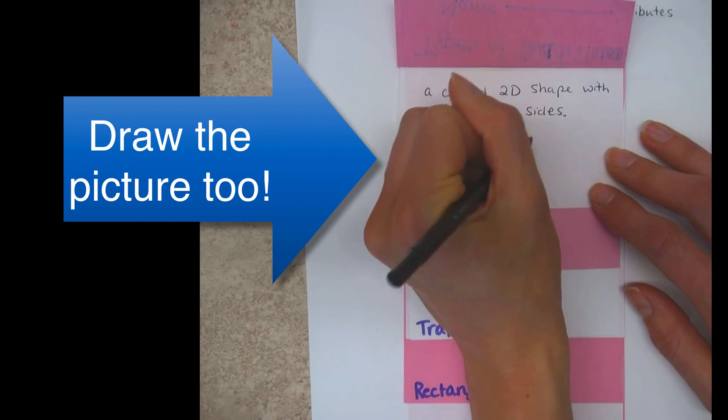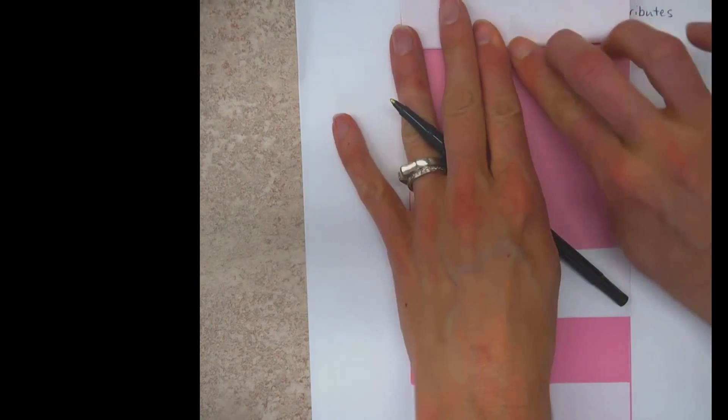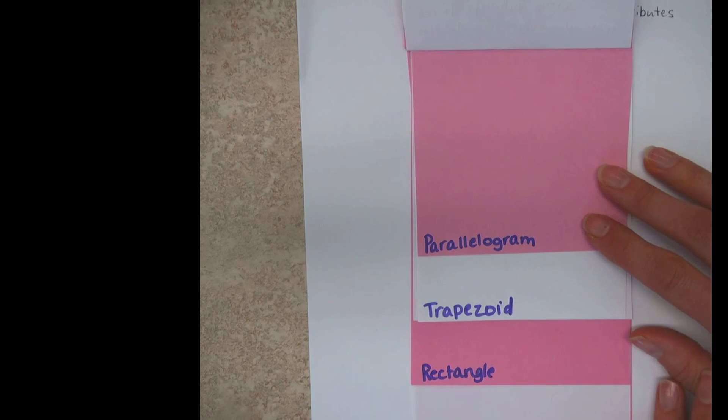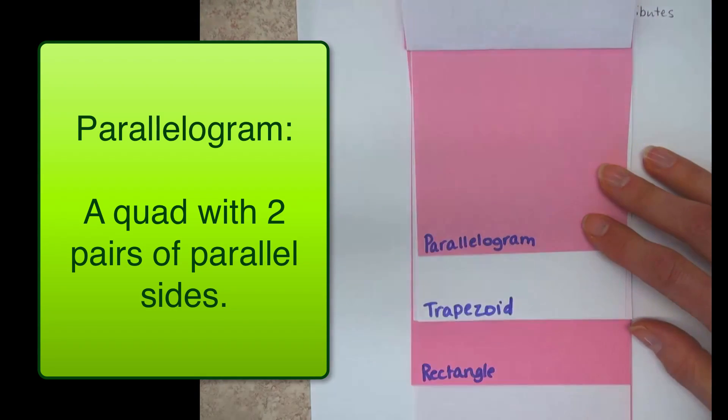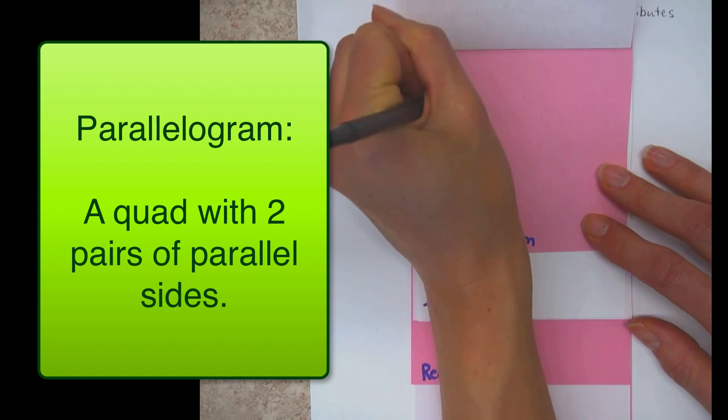Could look like a diamond too. Our next one is a parallelogram. A parallelogram is, and I don't know if we need to write a quadrilateral, because all of these are quadrilaterals, so just know that. But it has two pairs of parallel sides. Or maybe just for short, I'll say a quad.